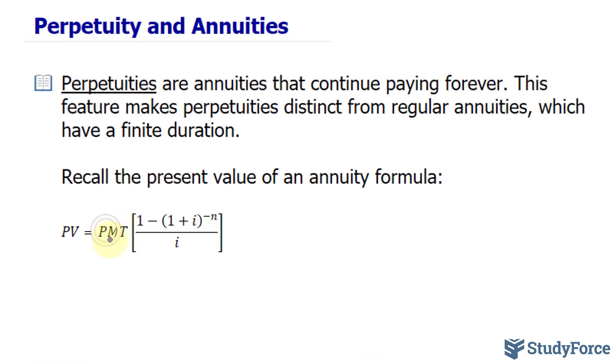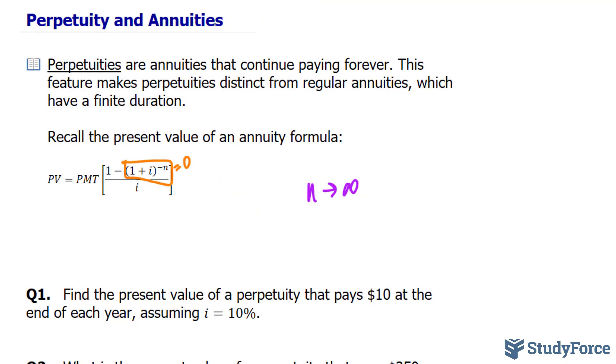if we take the limit of the right side of this equation where n goes to infinity, think of an extremely large number, if you will, and we substitute that value of n into here, regardless of what the interest is, this part of the equation will equal to zero.